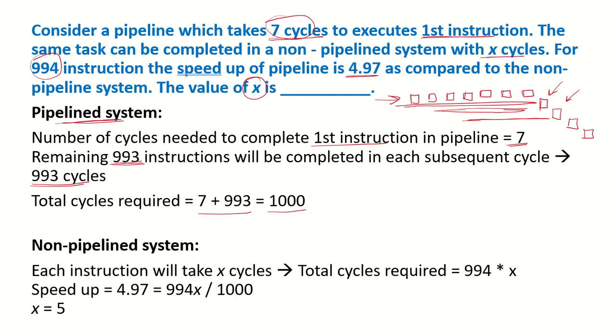Now let's consider the non-pipeline system. Each instruction requires x cycles. So if there are 994 instructions, then 994x clock cycles will be required.